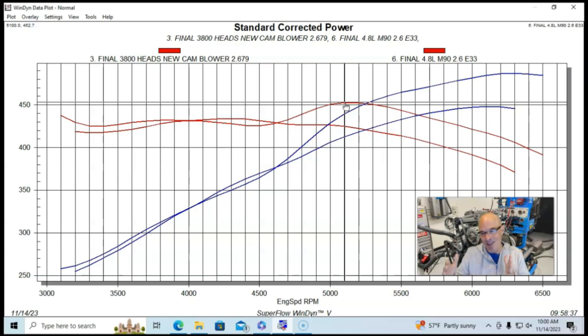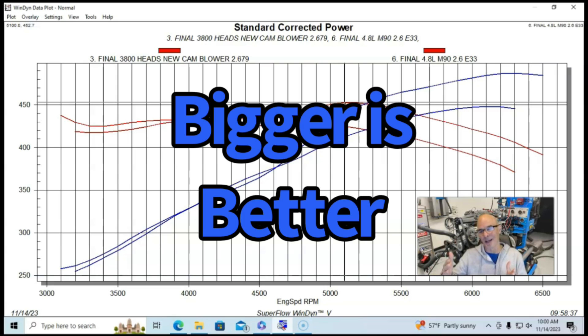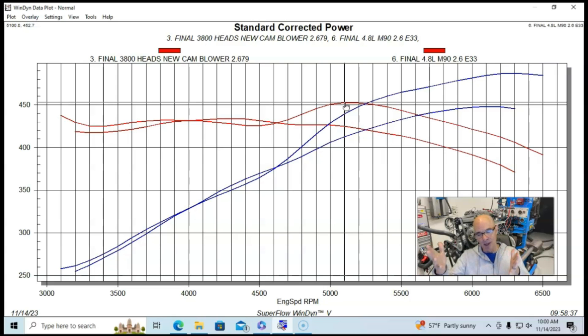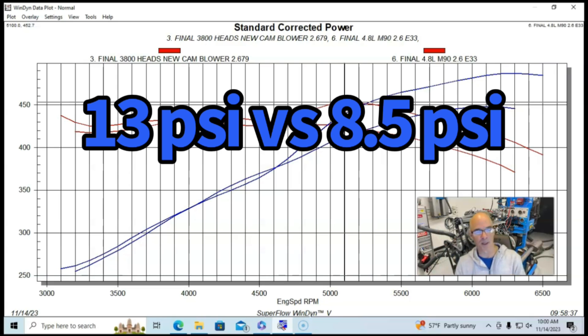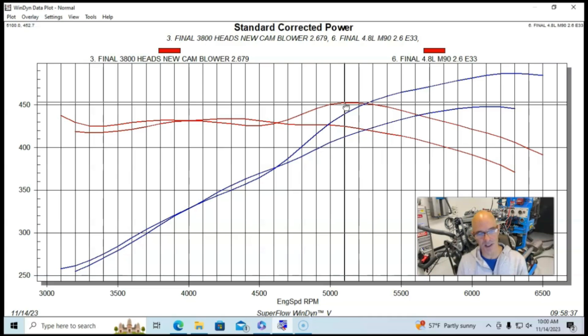But ultimately the bigger motor made more power and did so at a lower boost level. When we're running the same blower with the same blower speed, even though we ran it a little bit faster because of the crank pulley.